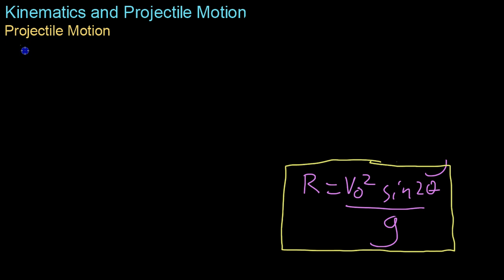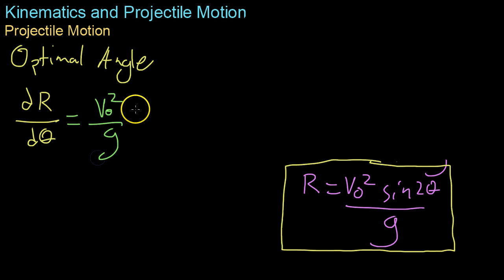Now as the last sort of exercise of this video we're going to be looking at the optimal launch angle for achieving maximum range and the way you do that maximization or optimization rather from calculus if you remember you derive the function with respect to the variable you're changing. Basically in this case dR/dθ equals V0 squared over G which is a constant times 2 cosine 2 theta.